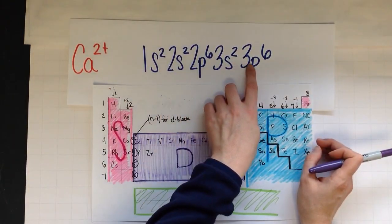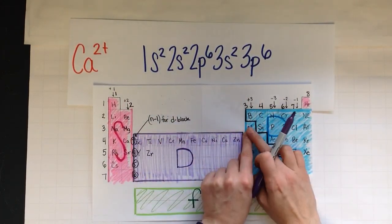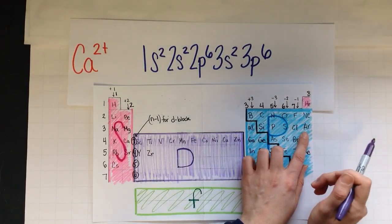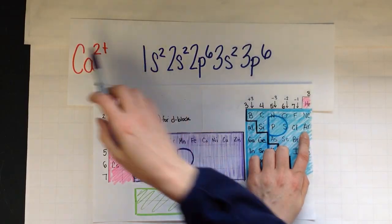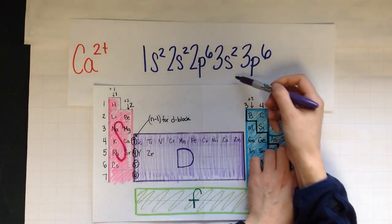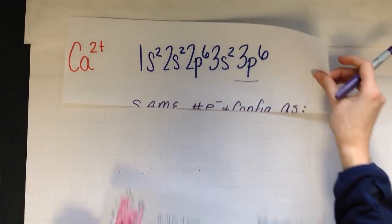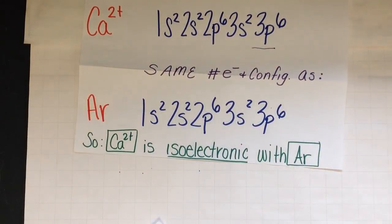1s2, 2s2 lands me all the way on 3p6. Here's three, here is p, one, two, three, four, five, six. That is the same electron configuration as argon. So calcium, the cation, has the same electron configuration as argon. Turns out every one of our ions is isoelectronic with an atom that is neutral.